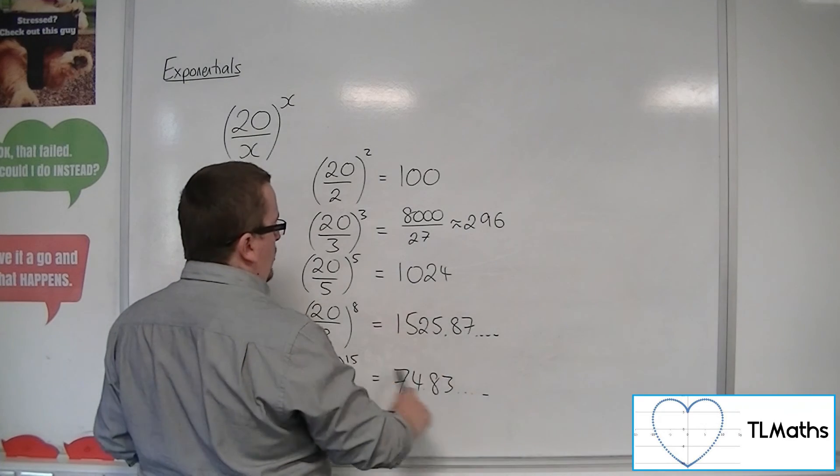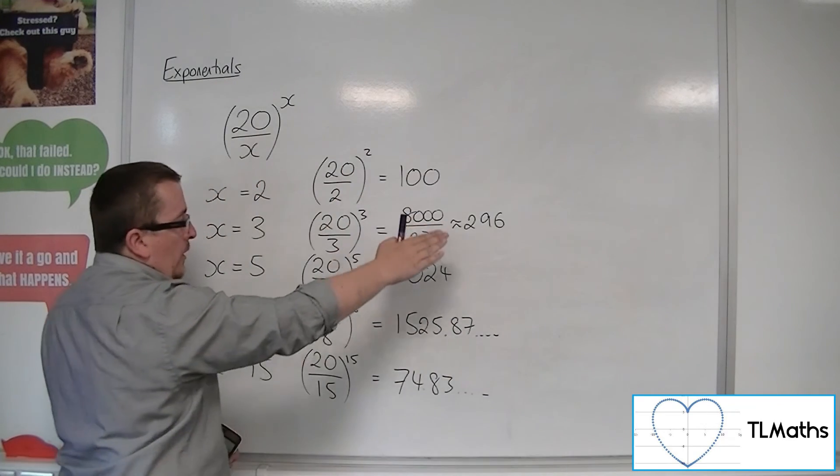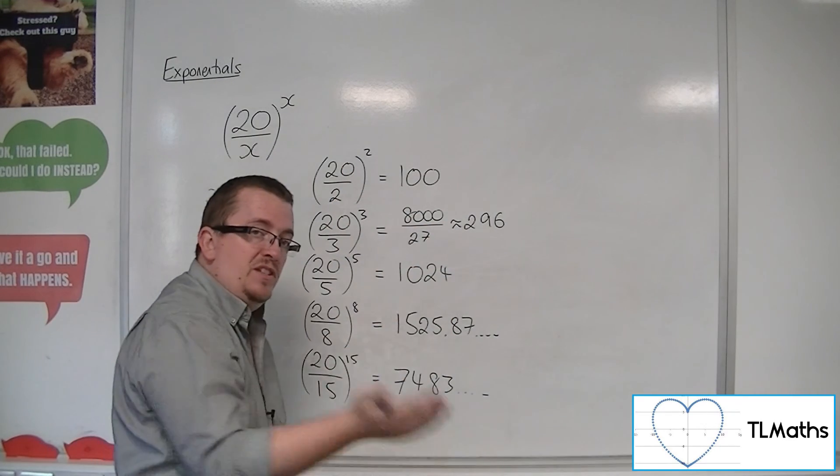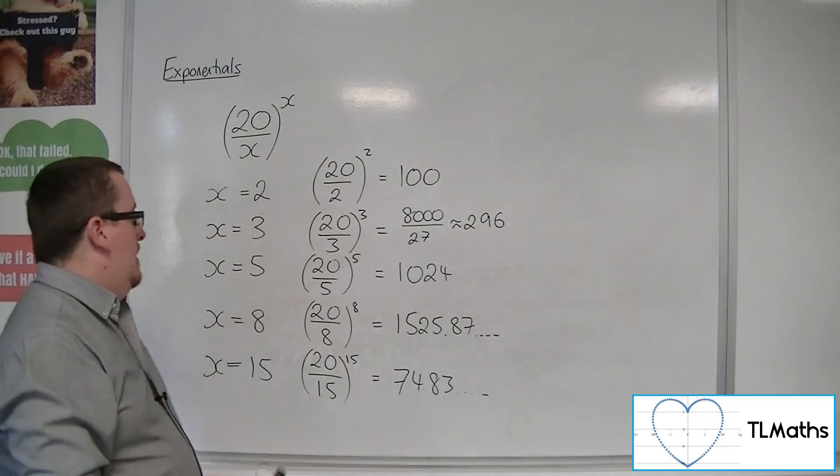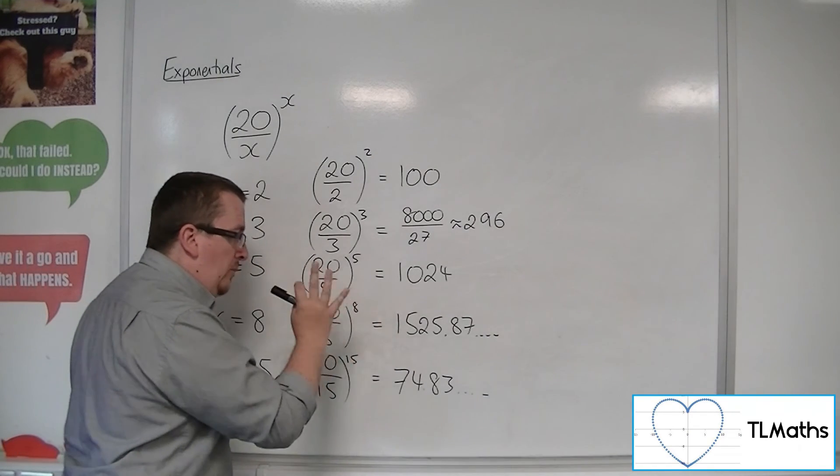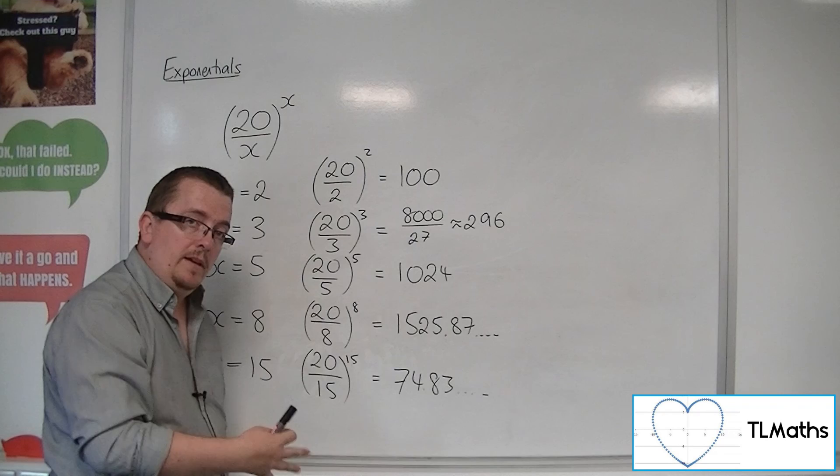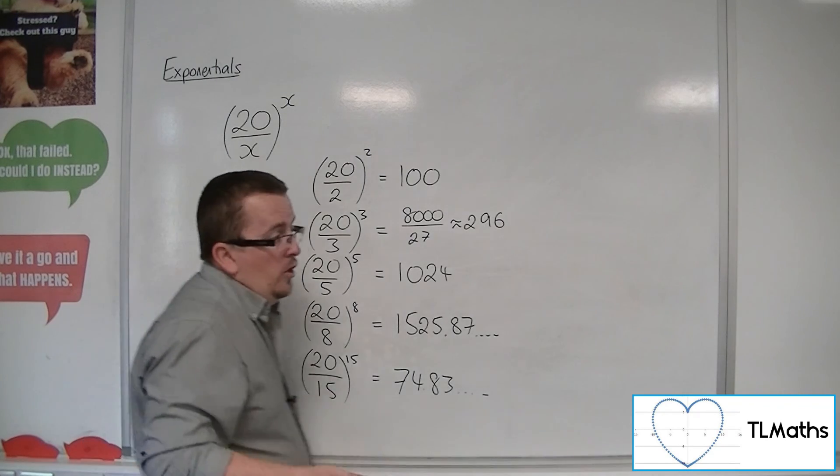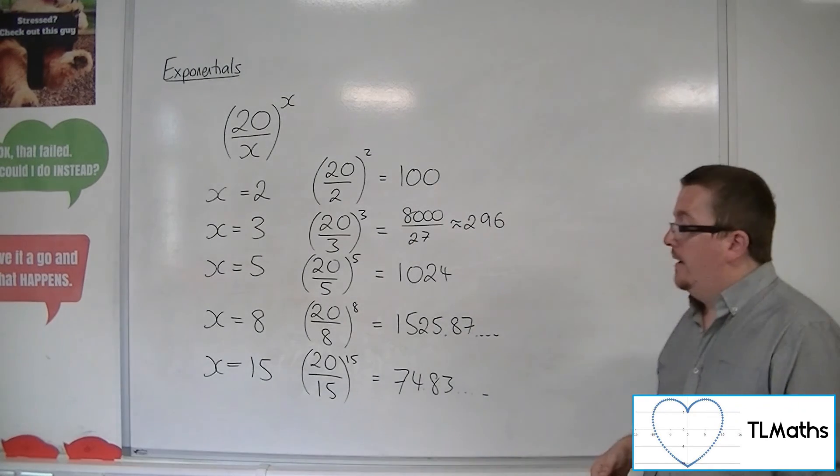So there must be actually some value, because we're going up and then down again. There must be some value where the x value is perfect enough to give us a maximum value that this can possibly be. Your job is to try and find that to as accurate a number as you can.